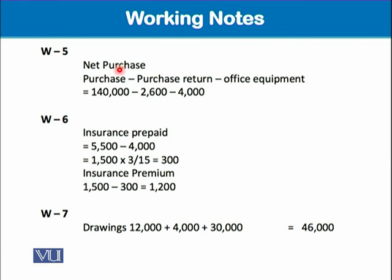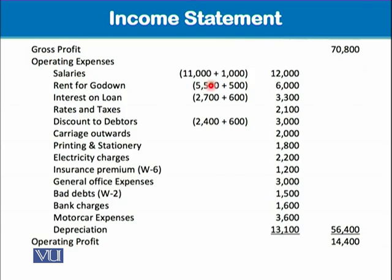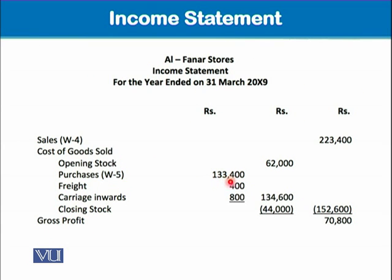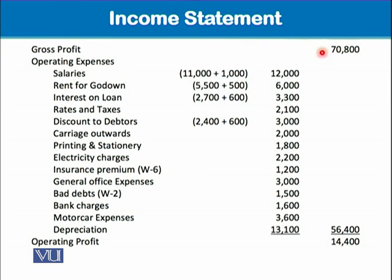Working 5 shows: purchases minus purchase returns, minus office equipment that was wrongly debited to the purchase account — this is now subtracted so that purchases equal 133,400. Adding freight and carriage inward gives total purchases of 134,600. Cost of goods sold comes to 152,600. Subtracting 152,600 from sales of 223,400 gives a gross profit of 70,800. Please have your calculators with you — as accounting students, a calculator is essential.